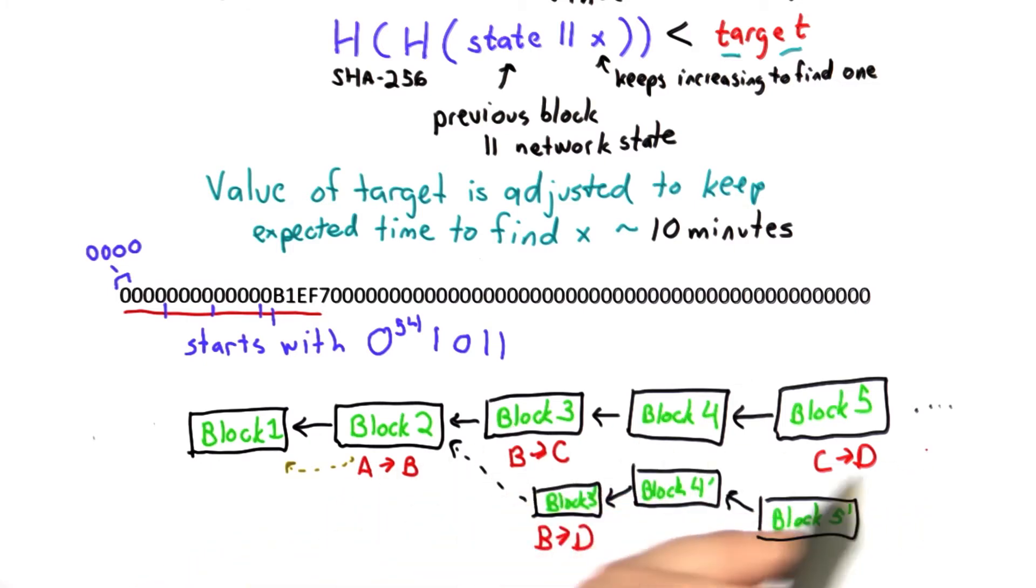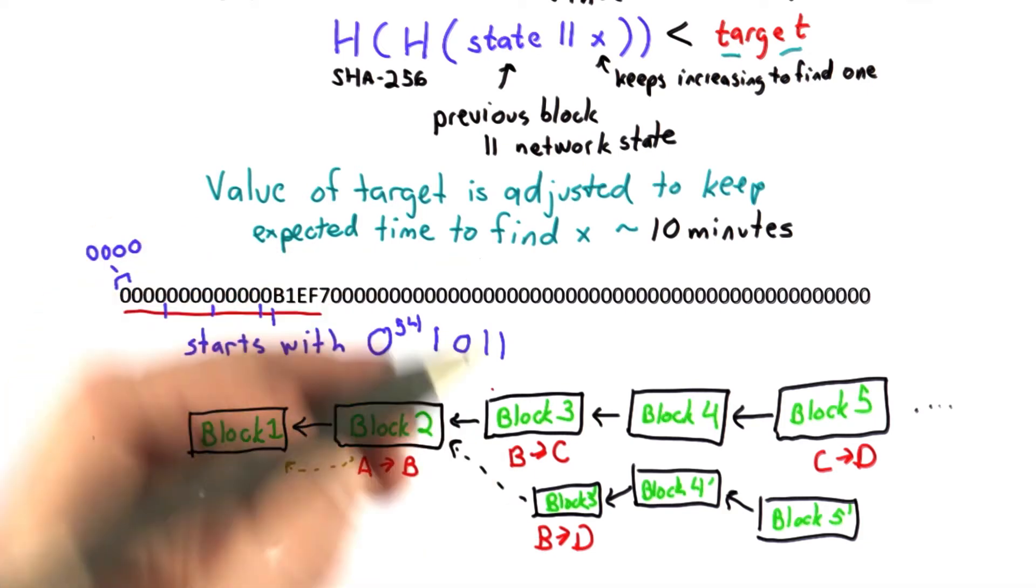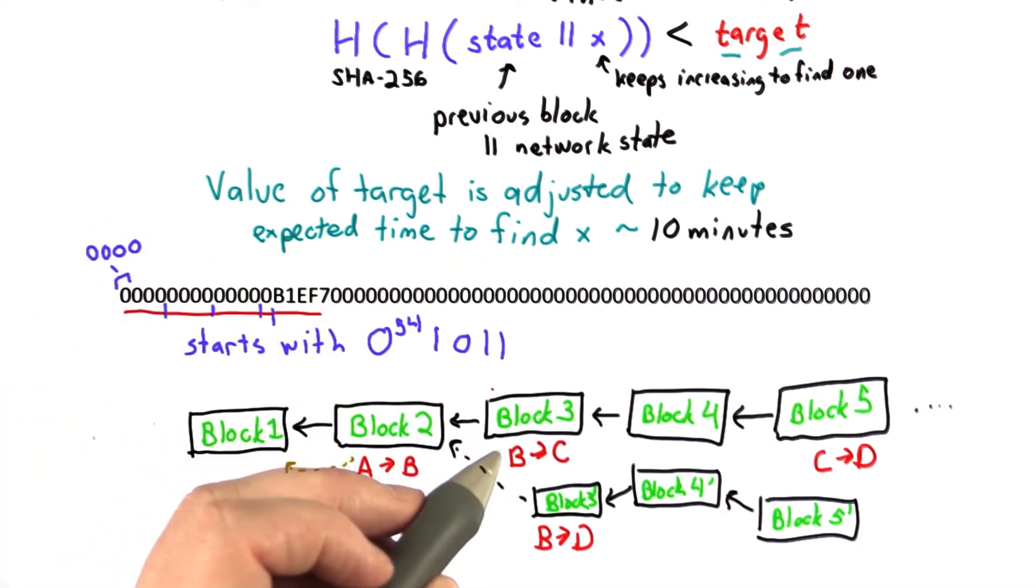There's still the chain of public key signatures that validates the transfers of each coin. So the resources that you would need to spend to produce a longer chain to convince someone that you didn't spend that coin in the other chain, which is now the one that would have included the previous spend.